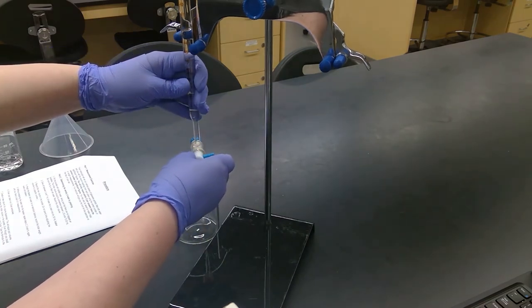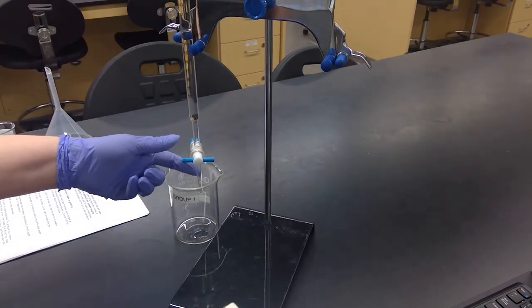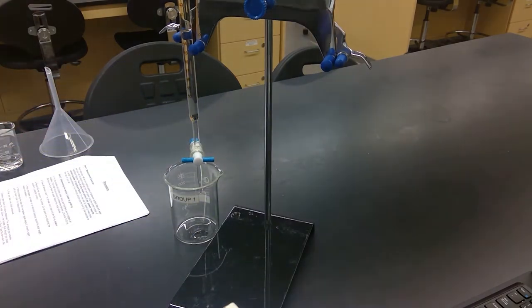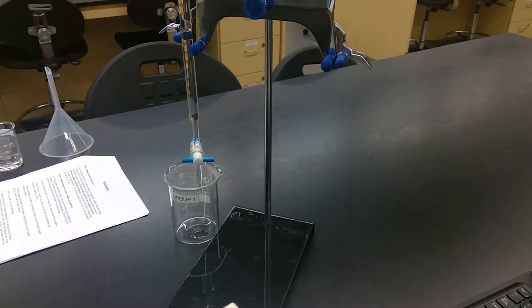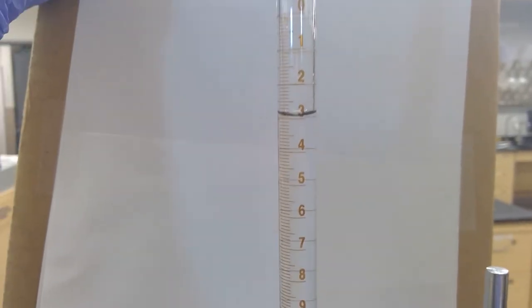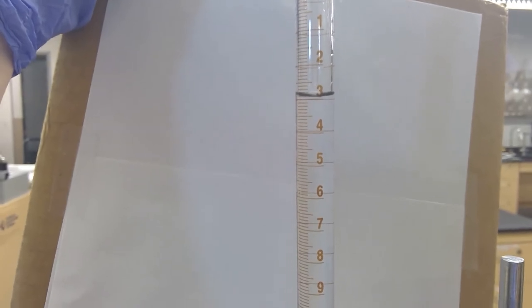You don't want to just open it and leave it there because it'll continue to go down. You just want to open it enough that there isn't any air bubbles left in here. Now the burette is full through the tip and we can take our initial reading. Record your initial volume.